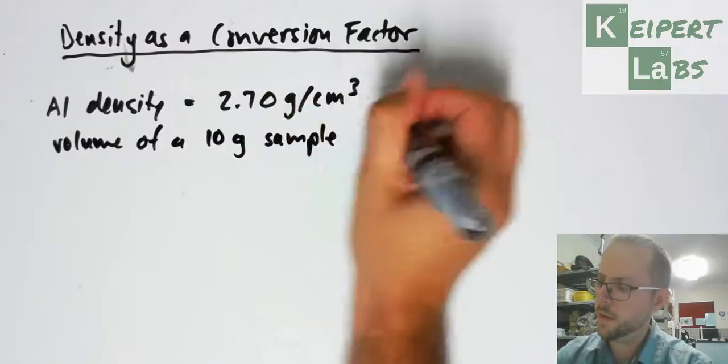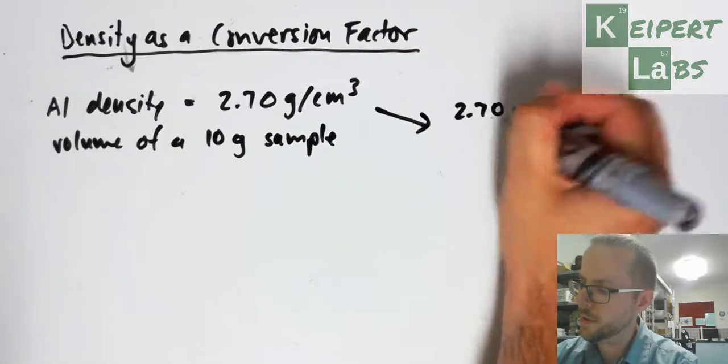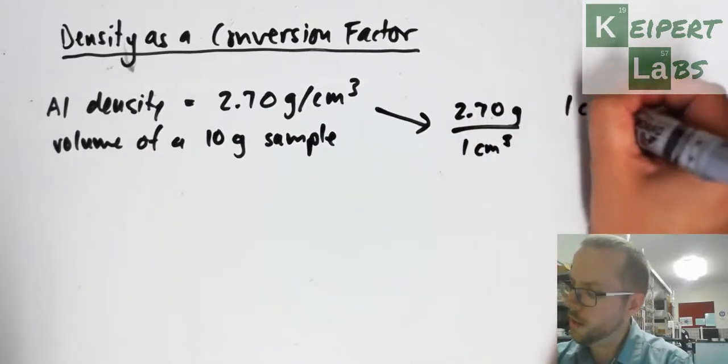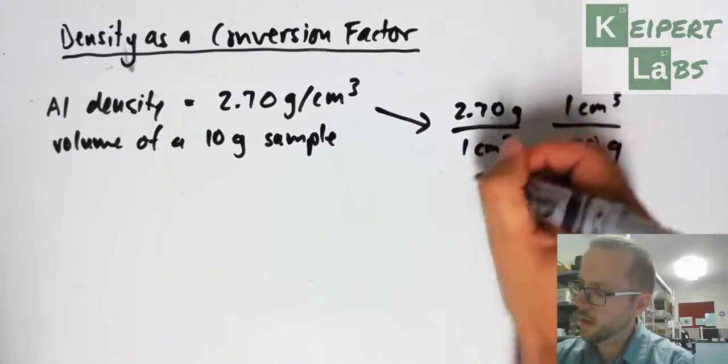Just as before, I could set up two conversion factors. For every 2.70 grams of aluminum, I have one cubic centimeter, or for every 1 cubic centimeter, I have 2.70 grams - A or B.